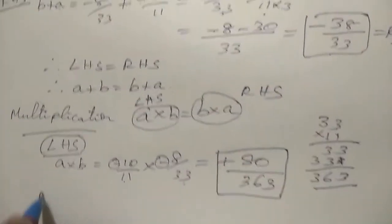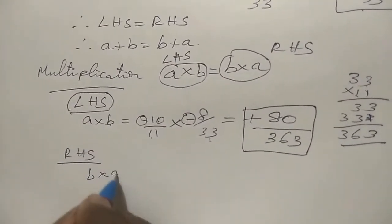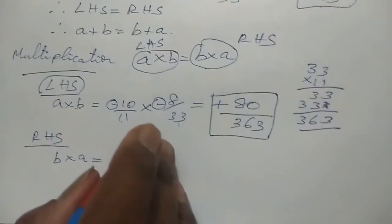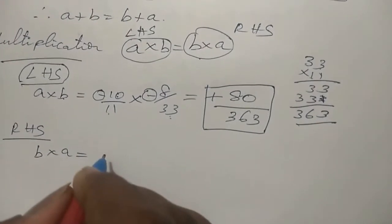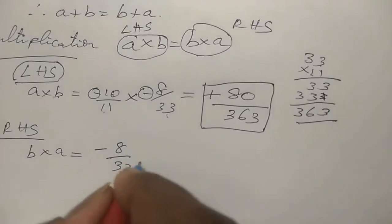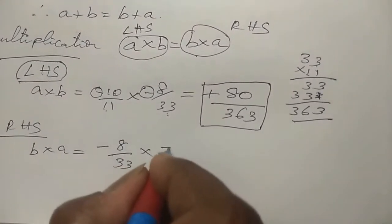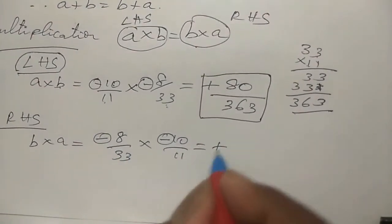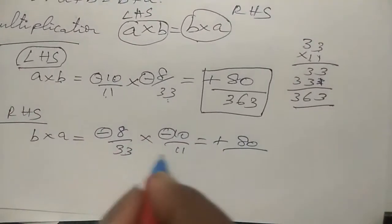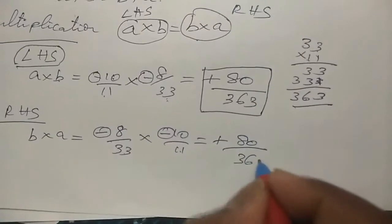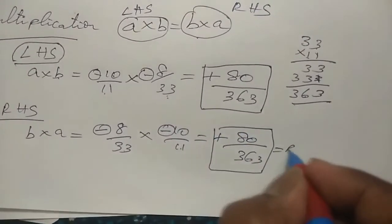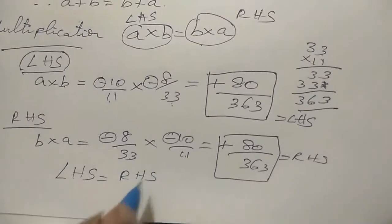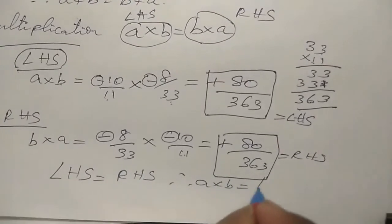Right hand side: b into a equals minus 8 by 33 into minus 10 by 11. Again, negative into negative gives positive. 8 into 10 equals 80. 33 into 11 equals 363. So the right hand side answer is 80 by 363. Left hand side equals right hand side.